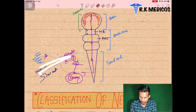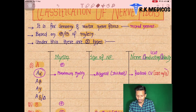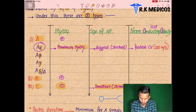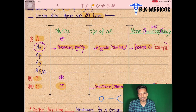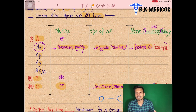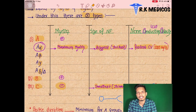Now we understand what myelinated and unmyelinated means — where they are fast and where they are slow. Looking at A-alpha: it has maximum myelination in the classification and is the biggest and thickest, because more myelinated fibers means it looks thicker and larger. The conduction is very fast because there are more nodes of Ranvier, more sodium ion exchange, and more sodium-potassium channel activity, leading to faster saltatory conduction. The speed is 120 meters per second.